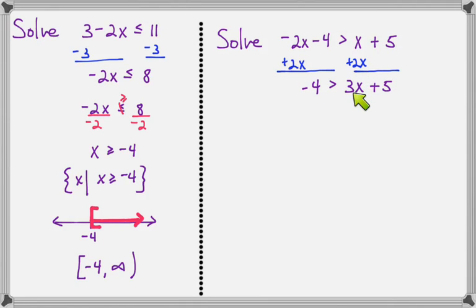So it's a little bit of a drag to have the x on the right. But if I want to at the end, I can just switch the inequality around so that the x is on the left. So it's really not a problem. So now I have negative 4 is greater than 3x plus 5. So let's subtract 5 from both sides. And that will give us negative 9 is greater than 3x.